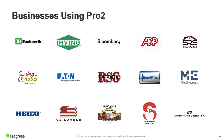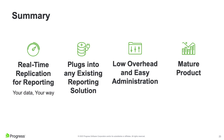We have 250 customers, and here's a sampling of familiar names using Pro2 — many with more than one instance because they have many installs across different plants or locations. To summarize: Pro2 provides real-time replication reporting — your data, reported your way. It plugs into any existing reporting solution, with Power BI — now free with any Microsoft 365 subscription — being the most common. It's low overhead, easy administration, and once set up, takes very little maintenance. Threads are auto-restarted if one fails, providing self-healing real-time replication.